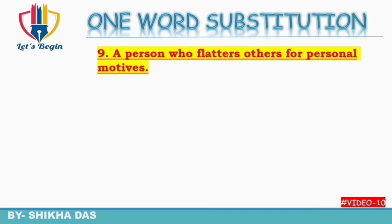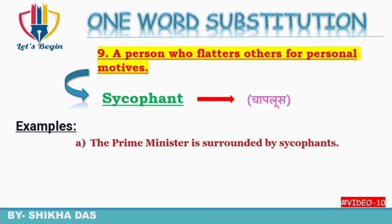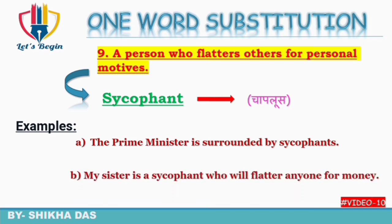Next: a person who flatters others for personal motives — apne motives nikalne ke liye doosron ki chamchaagiri karne wala, flatter karne wala. Isko kehte hain 'sycophant'. Sycophant ko Hindi mein kehte hain 'chaploos'. Examples: 'The prime minister is surrounded by sycophants.' 'My sister is a sycophant who will flatter anyone for money.' So sycophant means chaploos, flatter karne wala.